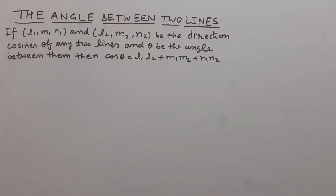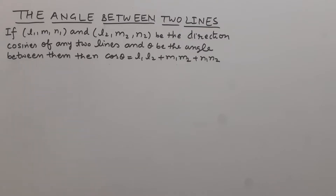In this article, we have to find the angle between two lines. If l1, m1, n1 and l2, m2, n2 be the direction cosines of any two lines and theta be the angle between them, then cos theta is equal to l1·l2 plus m1·m2 plus n1·n2.